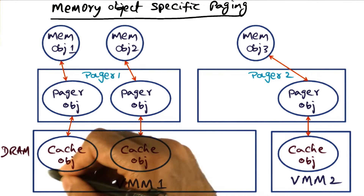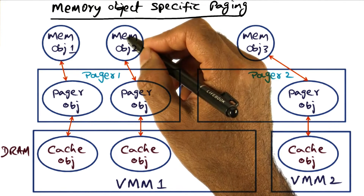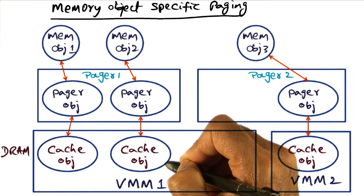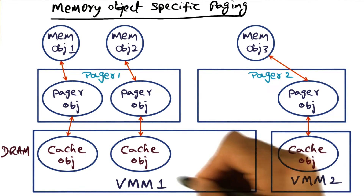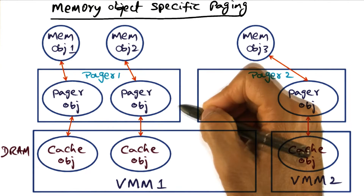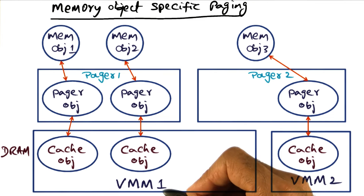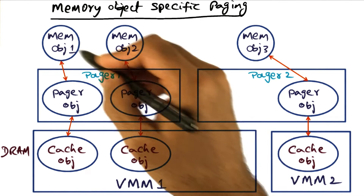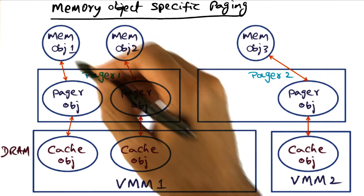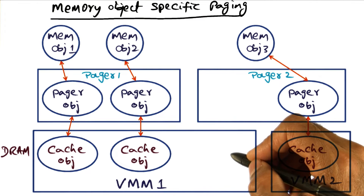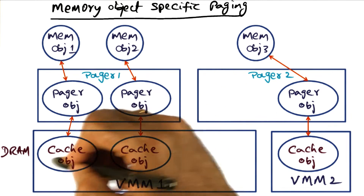For instance, there is another region of the linear address space that is mapped to a memory object, and there may be a pager object that governs the paging of this object into a DRAM representation — a cached object representation — which is part of the region of the linear address space of a particular process managed by VMM1. In this example, pager one is a pager for two distinct memory objects — memory object one and memory object two — which are cached by VMM1 on behalf of a process. The important point is that there is not a single paging mechanism that needs to be used for all memory objects. This gives you the ability to have different regions of the linear address space of a given process use different pager objects, each associated with a particular memory object.